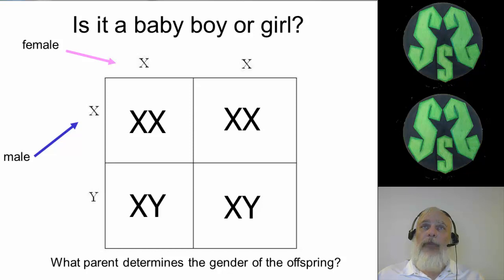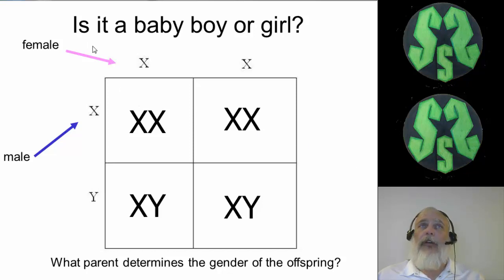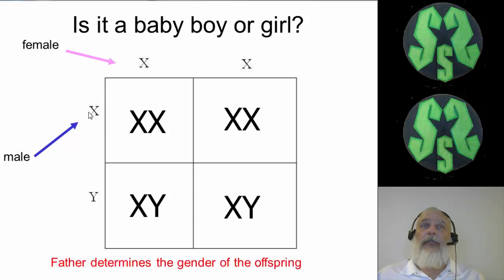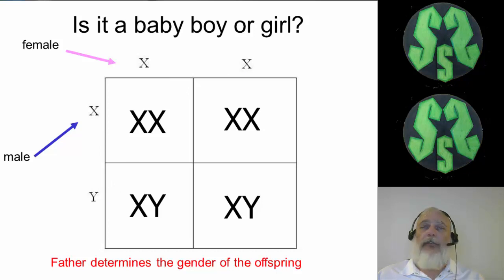So which parent is actually going to determine the gender of the offspring — mommy or daddy? It's going to be the father, because the father is either going to give an X chromosome or a Y chromosome. The mom is always going to give an X chromosome.